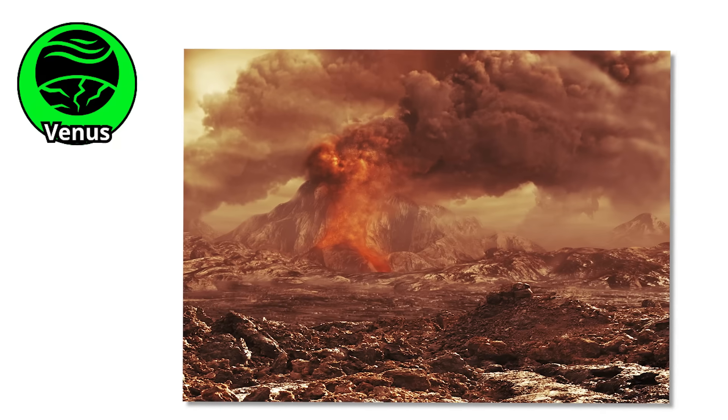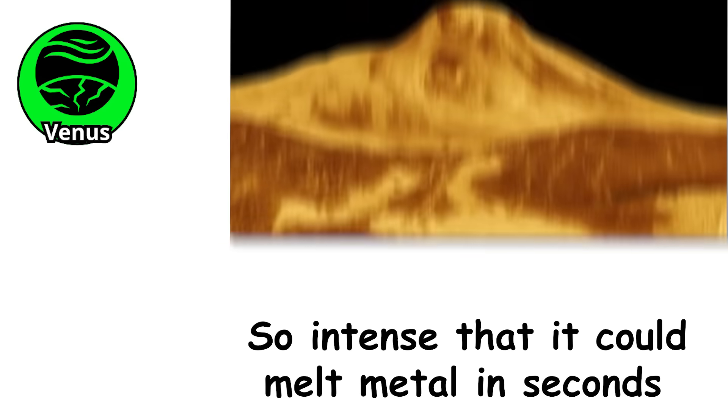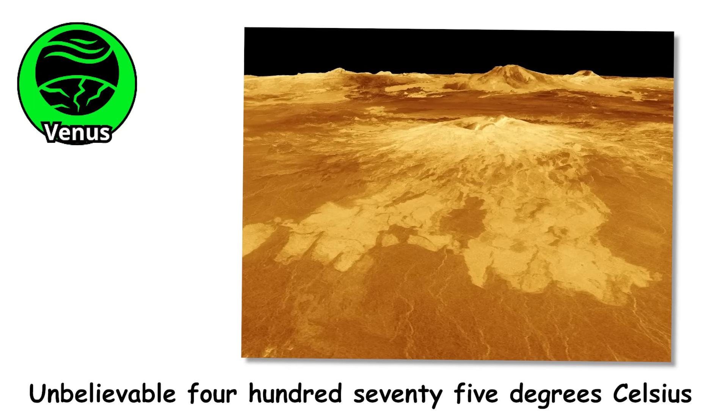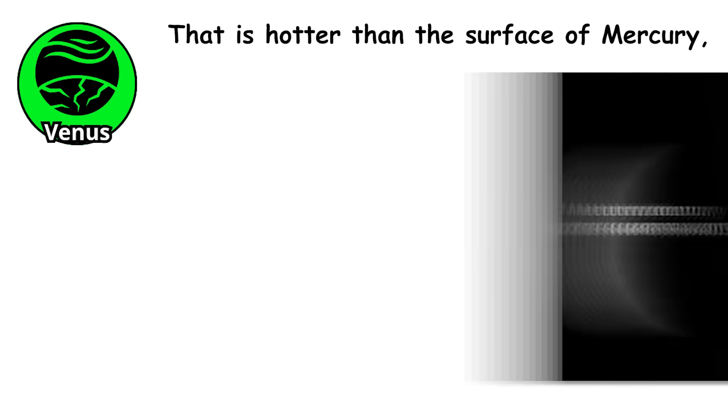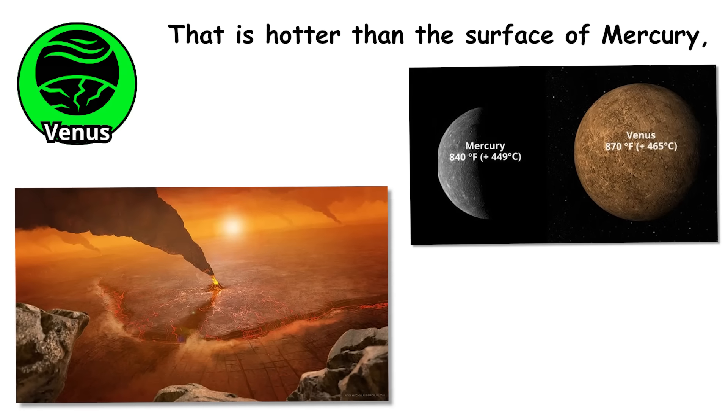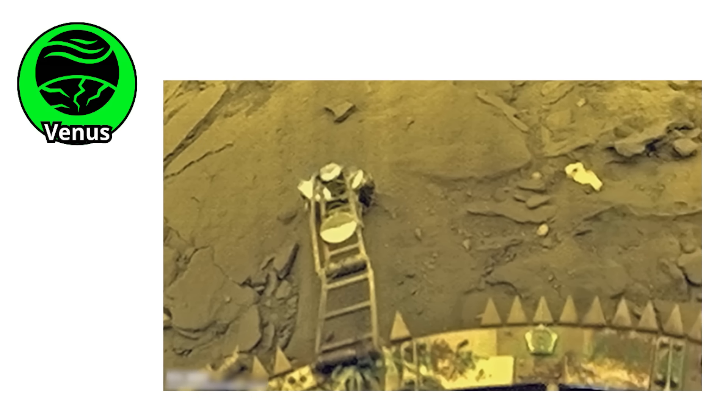Imagine stepping outside and instantly being hit by a wall of heat so intense that it could melt metal in seconds. The surface of Venus reaches an unbelievable 475 degrees Celsius. That is hotter than the surface of Mercury, even though Venus is farther from the Sun. You would not just sweat there, you would vaporize.